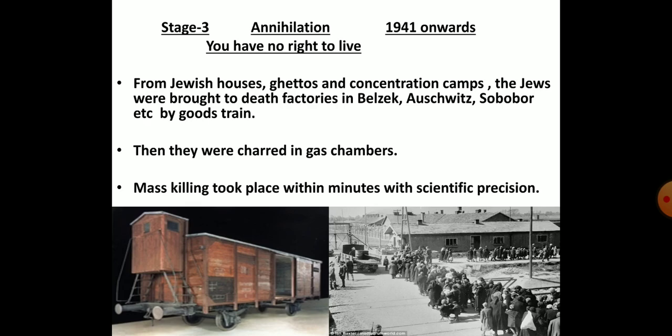The third stage was Annihilation, which commenced from 1941 onwards, and aimed: 'You have no right to live.' From Jewish houses, ghettos and concentration camps in different parts of Europe, the Jews were brought to death factories by goods trains. Then they were burned in gas chambers. Mass killing took place within minutes using scientific methods.